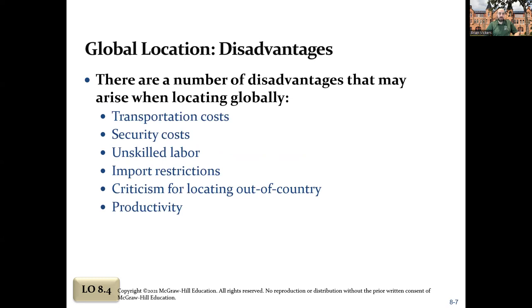There are disadvantages as well. One is that transportation costs are going to be very high if you are shipping from overseas, as opposed to shipping within the same state or country. There are costs with security — you need to make sure your facilities are well secured because of potential turmoil in those countries. The labor might be unskilled until they have enough experience. For example, iPhones were being made in China and now they're being made in India; at first the results weren't great, but they're improving. There might also be restrictions and tariffs put on imports.